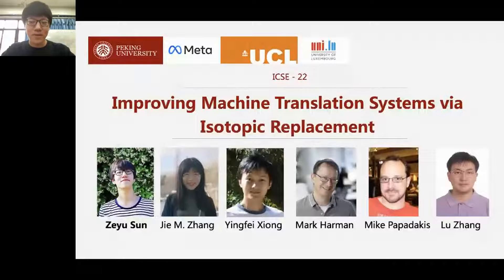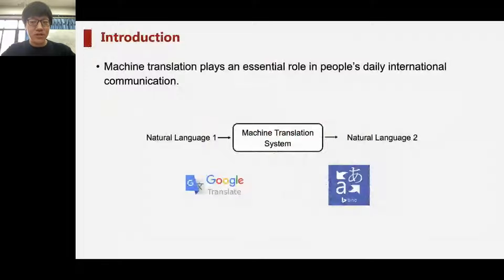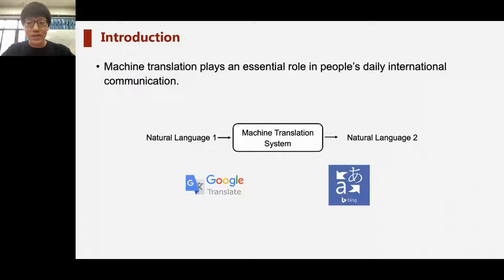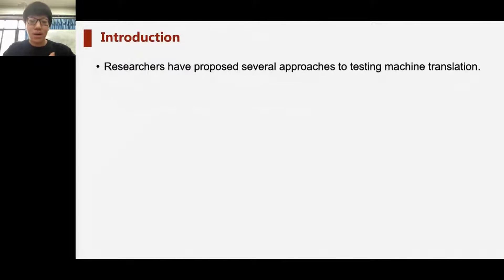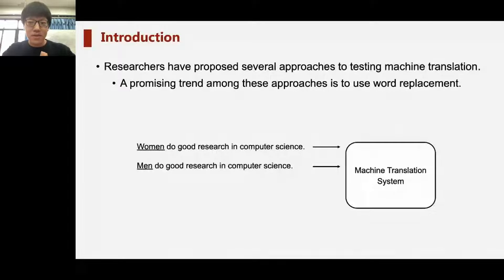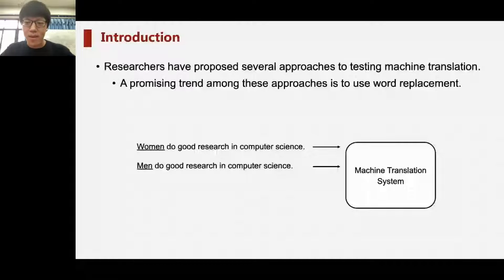Hello everyone, I'm from Peking University. This paper is about improving machine translation systems via isotopic replacement. Machine translation is able to translate between many pairs of languages effectively in real time, and tools such as Google Translate and Bing Translator are widely used in people's daily life. Such systems are not perfect, and the bugs users experience have a different character from those in traditional non-machine-learning-based software systems. Recently, several approaches have been proposed for testing machine translation systems, with a promising trend being the use of word replacement.